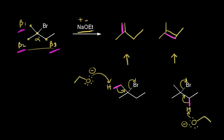These are the two products for this reaction. The isomer on the right is the major product, and the one on the left is the minor product. We're talking about regiochemistry here — the region of the molecule where the double bond forms. This reaction is regioselective because one of the isomers is favored.